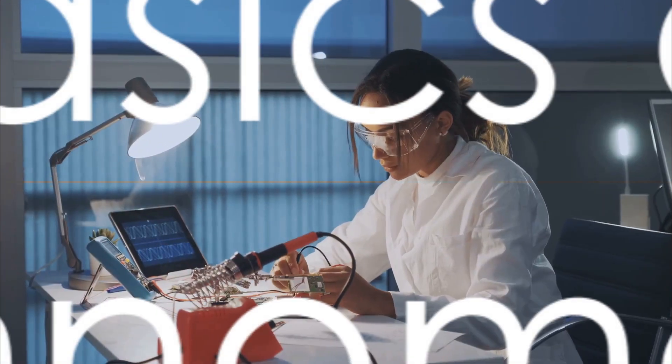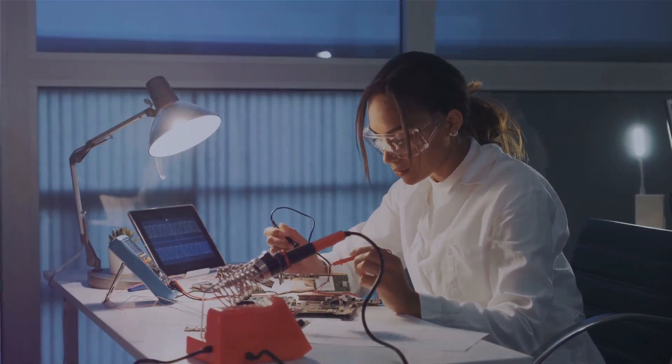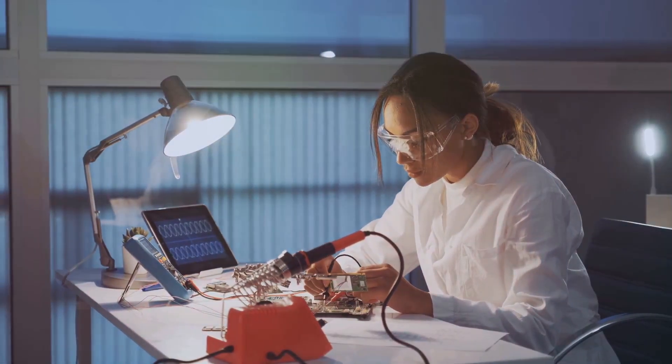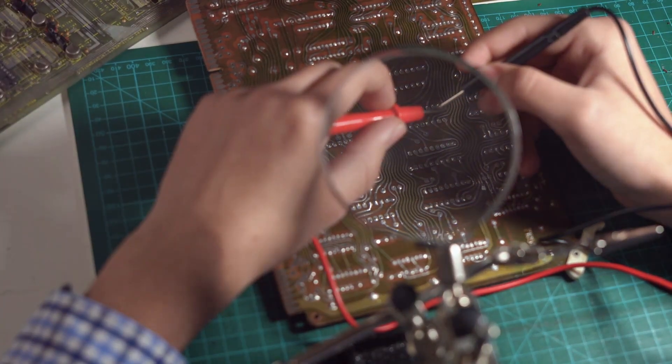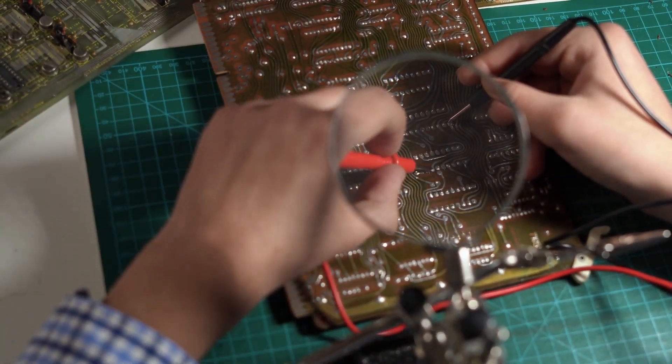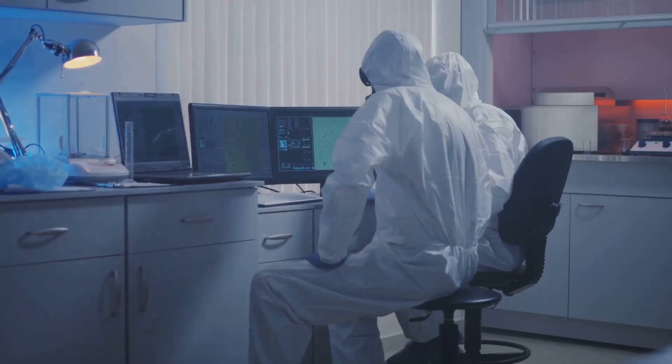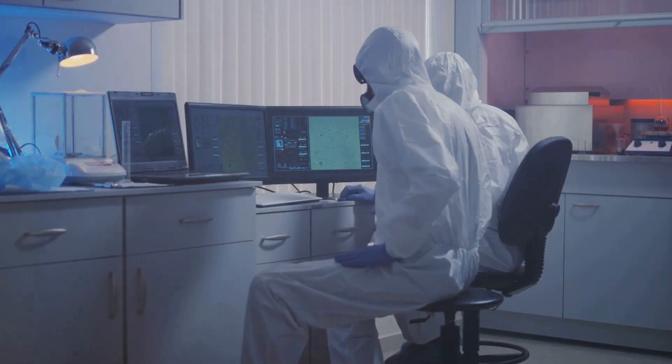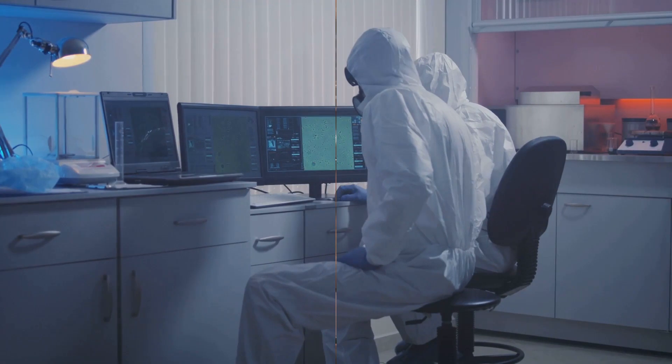Before we delve into the different types of technometers, let's first understand the basics of how they work. Technometers are electronic devices used to measure and analyze different parameters in various technological applications. They provide valuable data and insights to ensure optimal performance and efficiency.